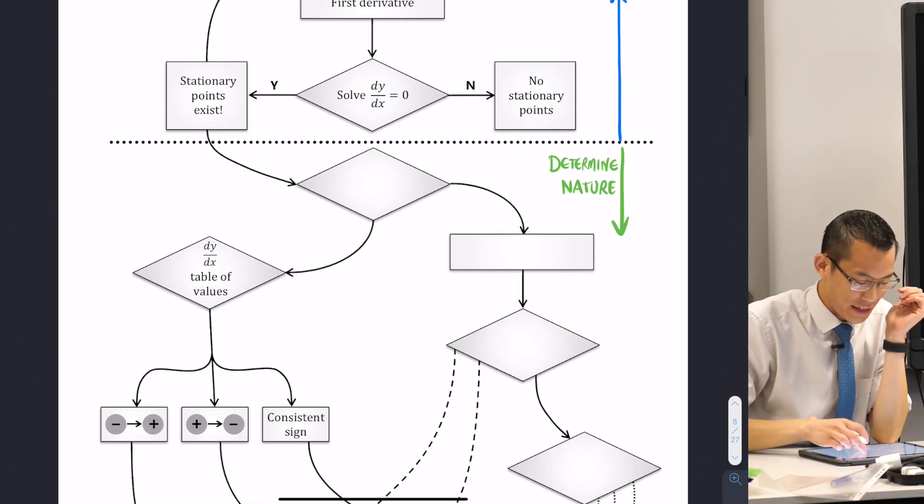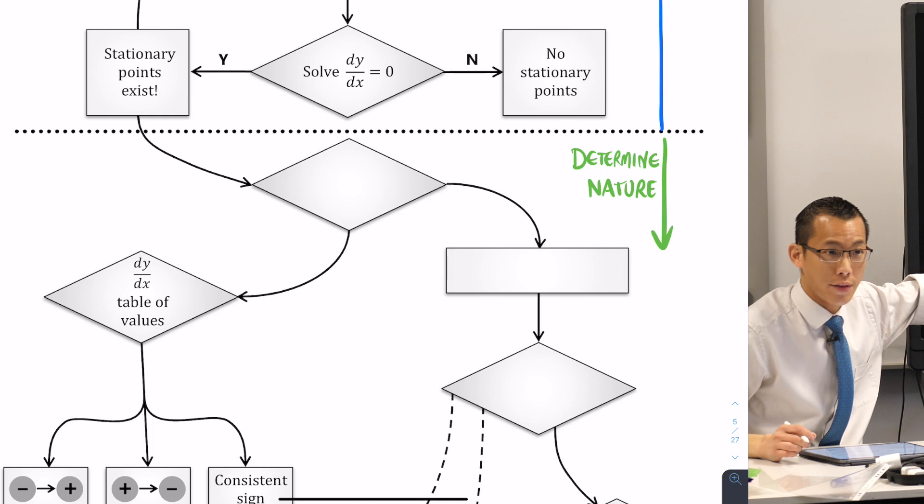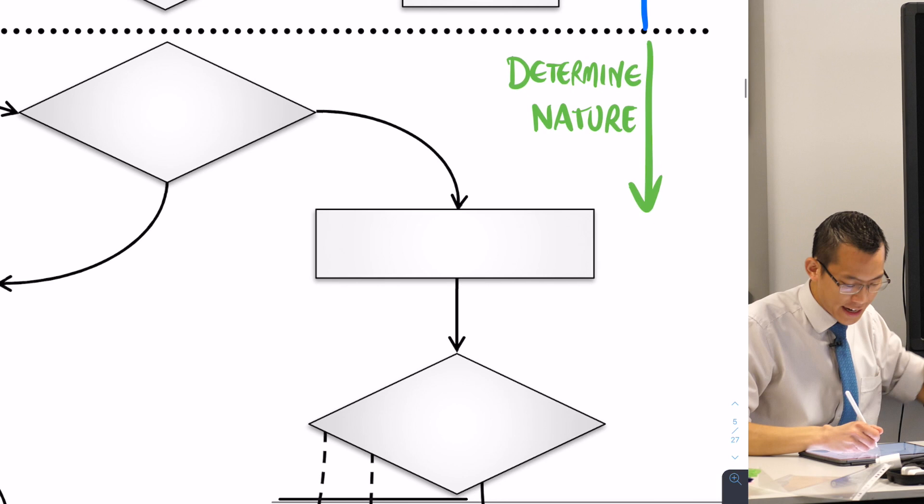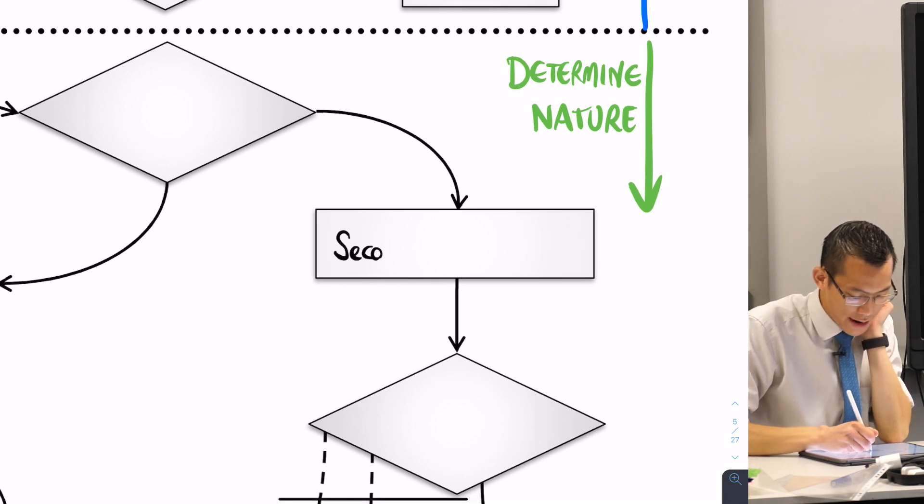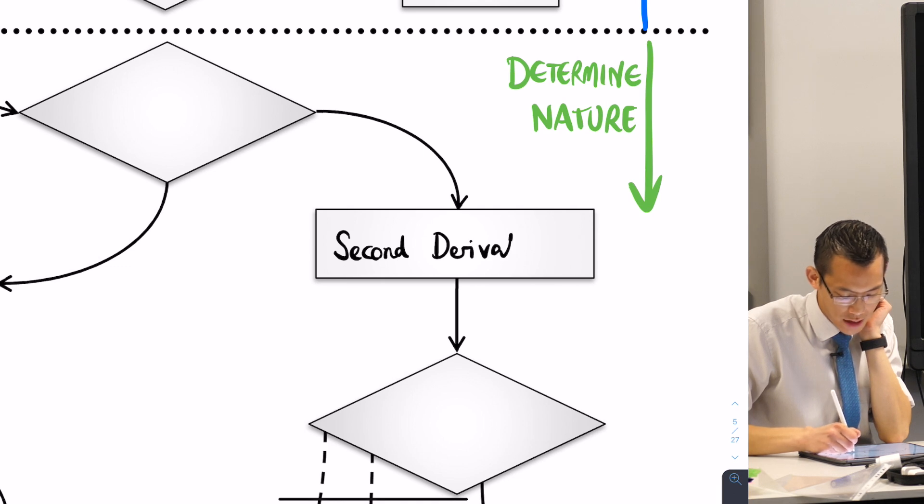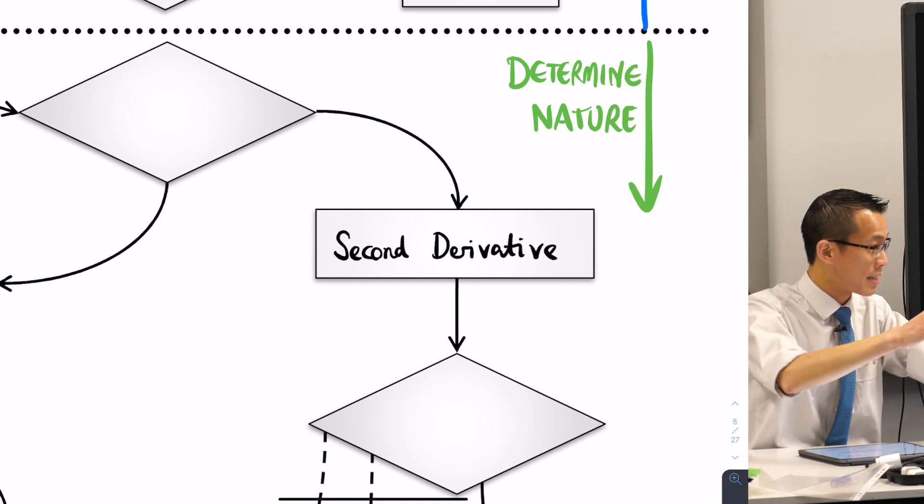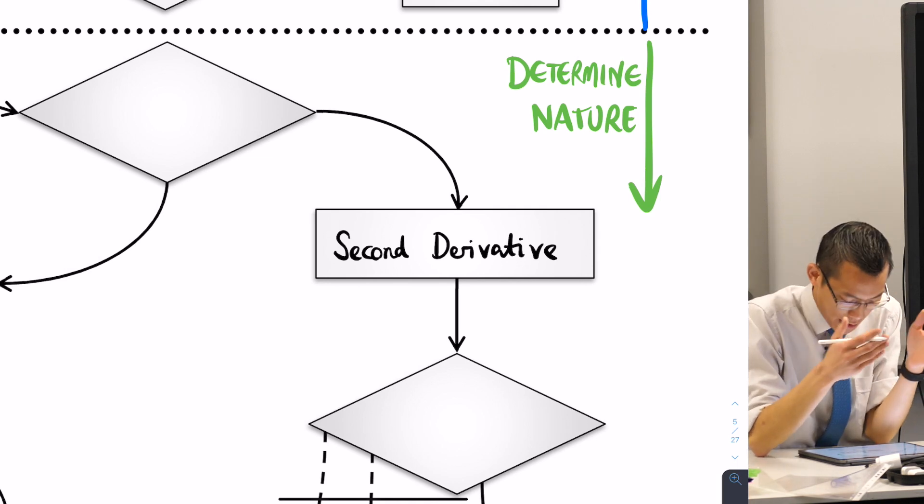We can choose, instead of going through the first derivative, we can choose to go via the second derivative. You might notice I've skipped a box. I'll come back to that box that I've skipped in a second. But let's just take what we already know, because in that table we've filled out today, you can help me out with this.